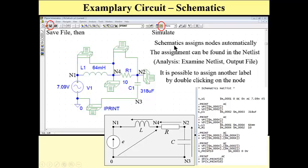Please observe that Schematics assigns nodes automatically and the assignment can be found in the netlist, in Analysis and Examine Netlist. Here. Analysis and Examine Netlist. It's here, shown here, or in the output file.